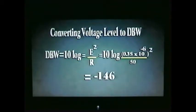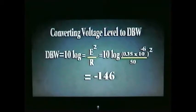dBw is simply 10 times the logarithm of the ratio of the power being considered to 1 watt. So a 100-watt transmitter would be 10 times the log of 100 divided by 1 watt, which comes out to plus 20 dBw. To convert a receiver sensitivity to dBw, it is necessary to convert the microvolts to power in watts. E squared divided by the usual 50 ohms impedance will do this conversion, and 10 times the log of this is minus 146 dBw. So 0.35 microvolts equals minus 146 dBw.